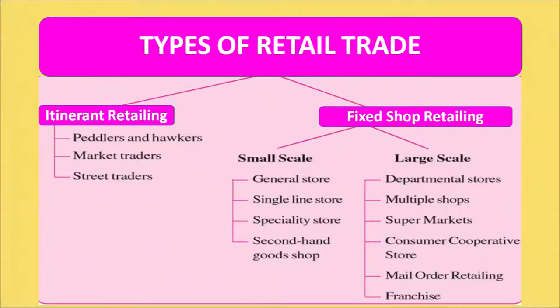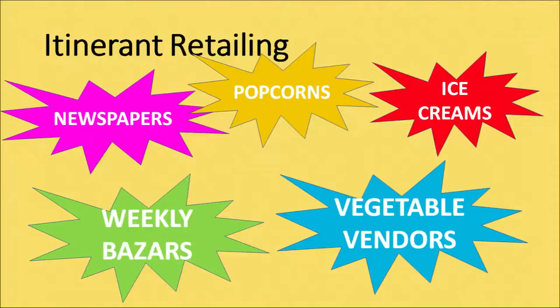Types of retail trade can broadly be of two types: itinerant retailing or fixed shop retailing. By itinerant retailing, we mean a facility where no fixed shops are maintained and commodities are sold by retailers as peddlers or hawkers. Products sold through itinerant retailing include newspapers, popcorns, ice creams, vegetable vendors, and even weekly bazaars come within the purview of itinerant retailing.